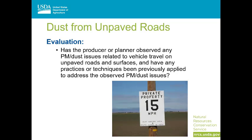Unpaved roads and other travel surfaces for vehicles can obviously be a large source of dust emissions on agricultural operations. Our evaluation here is similar to the one for field operations: if the producer or the conservation planner haven't observed any dust issues related to vehicle travel on unpaved surfaces, or if any conservation practices or techniques have been applied to address previous dust issues, we're going to say that you don't have a resource concern for this component. If there are dust issues, the producer could apply dust suppressants to the travelway or apply a couple of other NRCS conservation practices to address the issue.